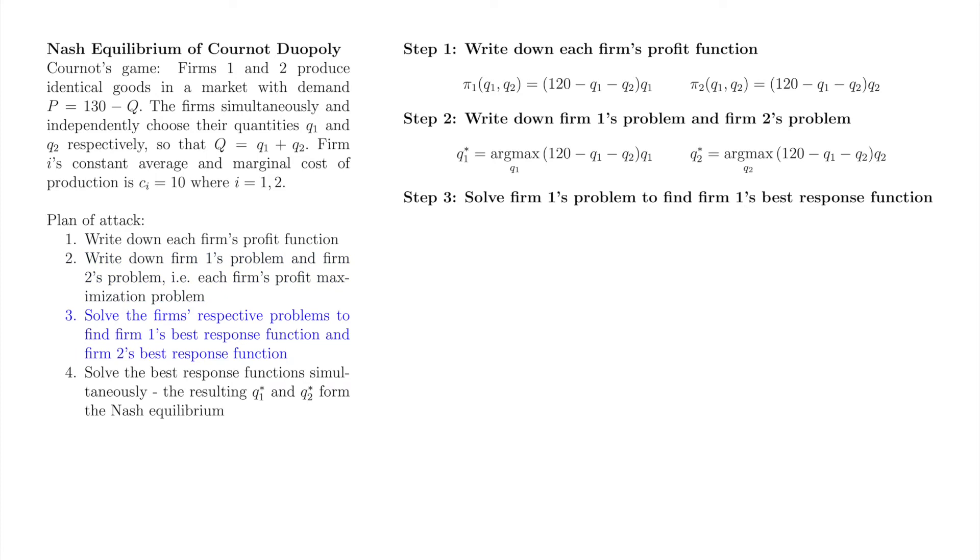Here in step 3, we'll solve the profit maximization problems from step 2. Step 3 is the parallel of underlining best responses in a matrix game. We can't write down a matrix here because each player has infinitely many strategies. However, we can use the same idea as underlining. We want to record firm 1's best response to each of firm 2's strategies.